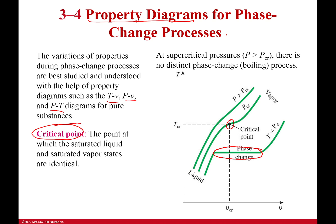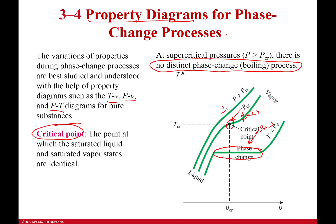Now if I go to supercritical pressures, there will be no distinct phase change or boiling process. It just kind of is one and then it's another, and it's really hard to tell the two apart. Before that point we will have distinct phase change processes — this will happen really quickly here, this takes a little bit more time, and this one is just more of a mystery. When is it a liquid? When is it a vapor? It's kind of all happening at once there.